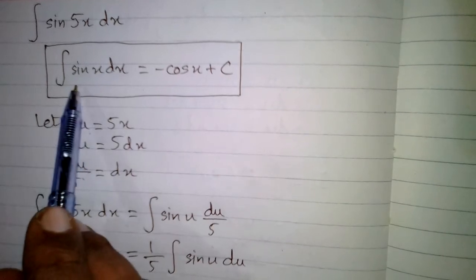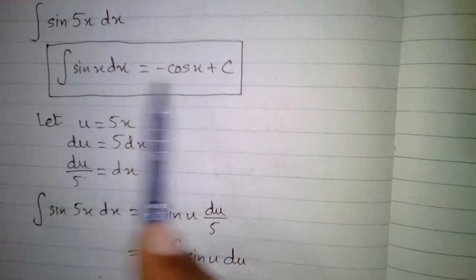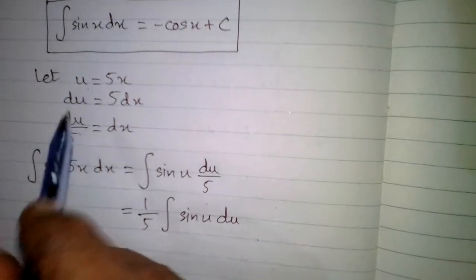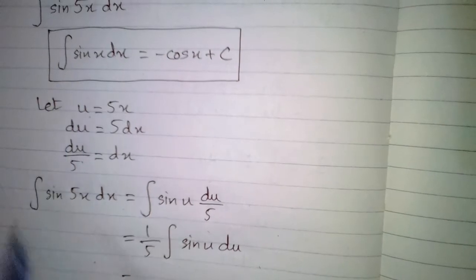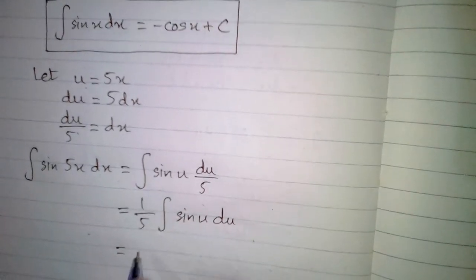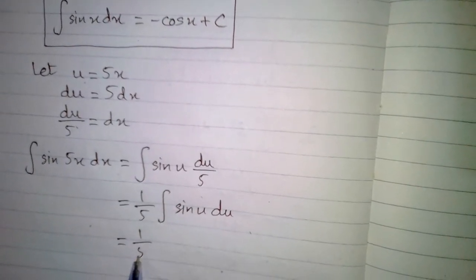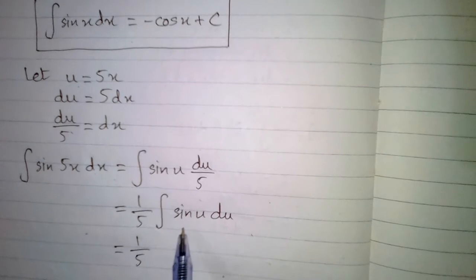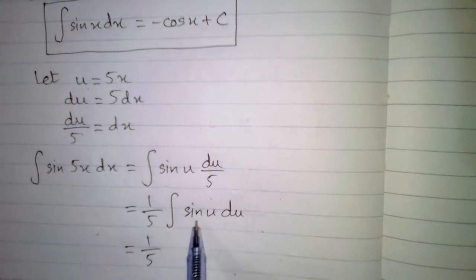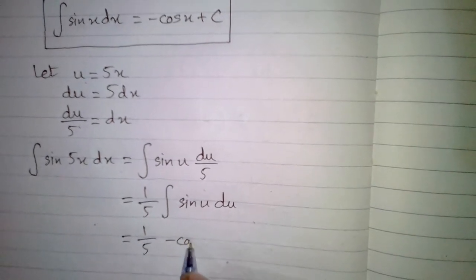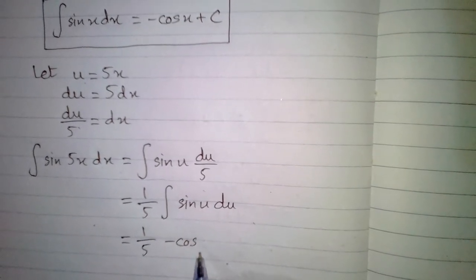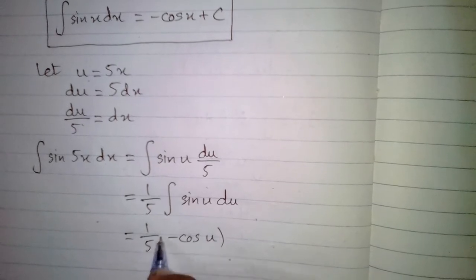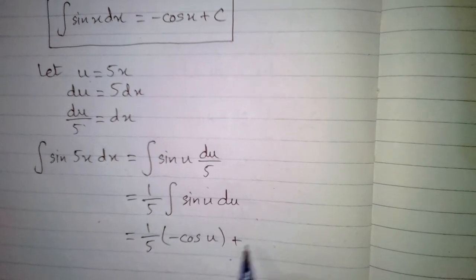Now we apply the formula that the integral of sin is minus cos. So we have 1 upon 5 times minus cos(u) plus C.